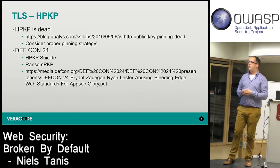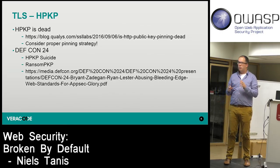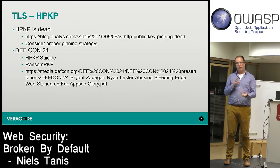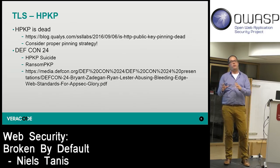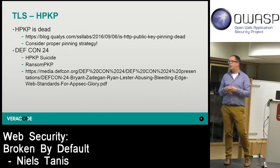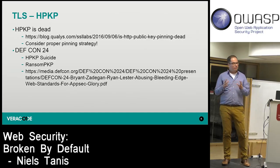The second example is 'ransom key pinning' — if somebody can inject a header into your web server they can inject a fingerprint for a certificate they own. Once your current certificate expires, they demand ransom for the private key. A reverse proxy can help mitigate this by preventing that header from being sent out by the web server.